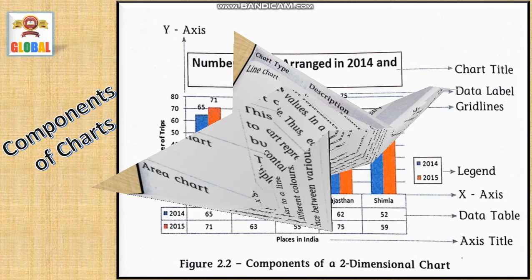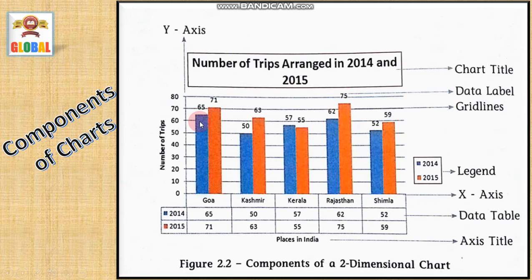Next is components of chart. See this figure. This figure shows you components of two-dimensional chart. Charts may be two-dimensional or three-dimensional. There are different parts of chart. However, all the components may not be present in all charts. See here. This is the chart title. Then, this is data label. This line, horizontal lines are called as grid lines. This information, this is called as legend. Then, this horizontal axis, it's called as x-axis. And this vertical axis is called as y-axis. Then, this is a data table. And this is the axis title. This is the axis title of x-axis. And this is the axis title of y-axis.